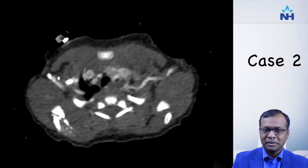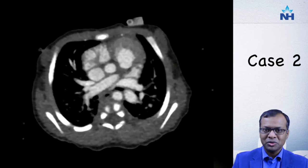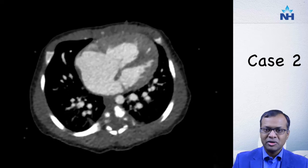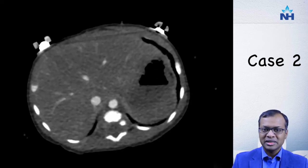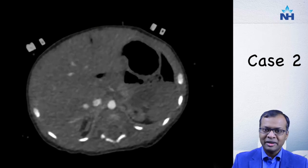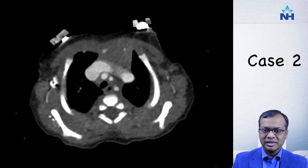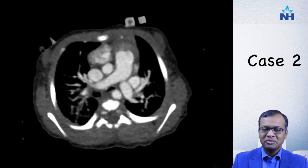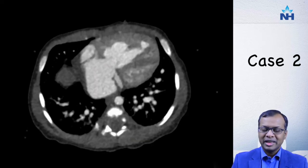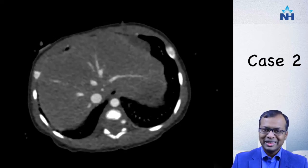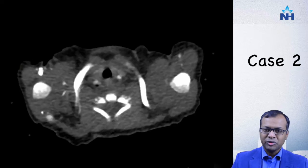Now let us look at case number two. I'm going to let it run a couple of times so you get acquainted with the pathology. Again our standard technique is one ECG-gated run and one non-ECG gated run so we can see the coronary arteries clearly. Remember the approach: look for abdominal situs, systemic venous return, ventricular relationship, pulmonary venous connection, the aorta, pulmonary arteries, and coronary arteries before making up your mind.